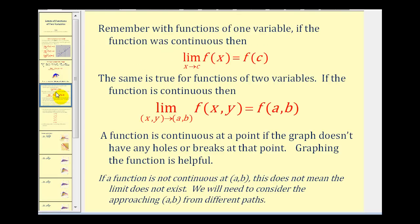There is one shortcut in some cases. Remember with functions of one variable, if the function was continuous around the value of c, we could determine the limit by performing direct substitution — we just plugged c into the function. The same is true for functions of two variables: if the function is continuous, then the limit as (x, y) approaches (a, b) of f(x, y) is equal to f(a, b), if we know the surface is nice and smooth and continuous.